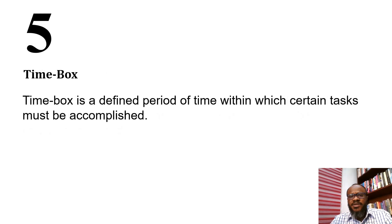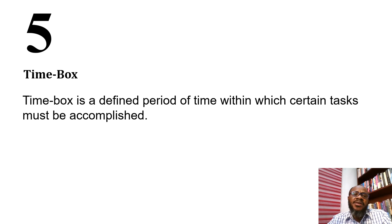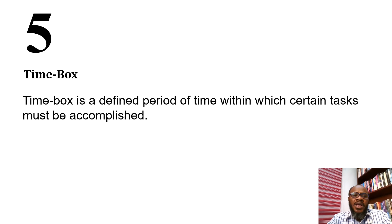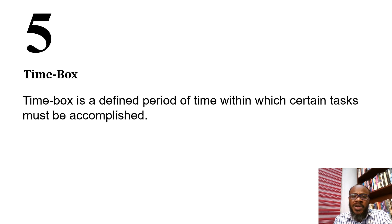Time box is a defined period of time within which certain tasks must be accomplished. In agile, several things are time-boxed — for example, a sprint time-boxed to two or three weeks means the end goal of that sprint must be fulfilled within that period. The reason we time-box is so the team maintains a steady pace and organizes itself to achieve the end goal within that period.